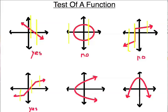Next one — pretty simple. It fails the vertical line test, passing through more than one point right there. So it fails the vertical line test, and I have to say no, it's not a function.